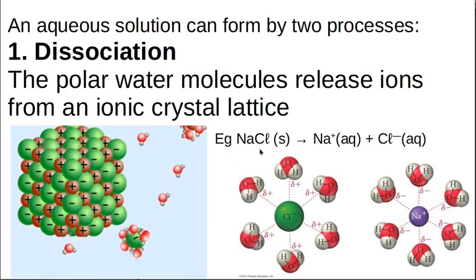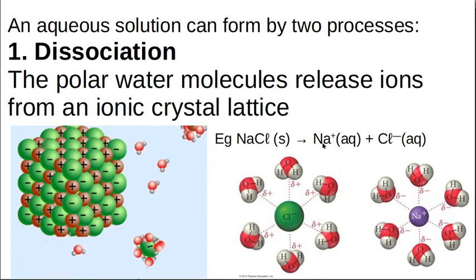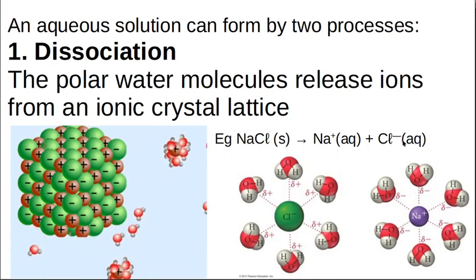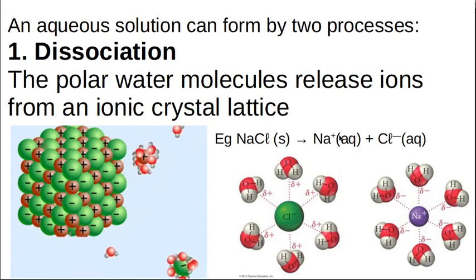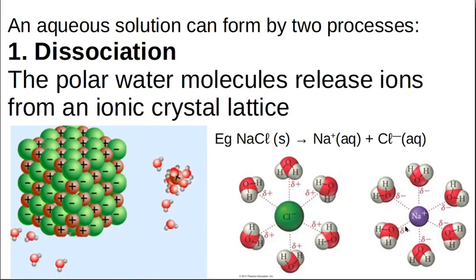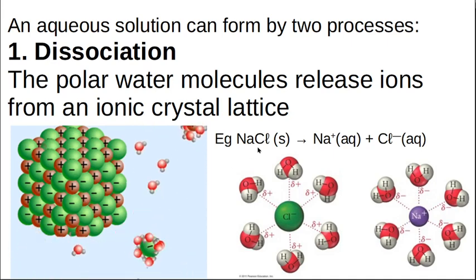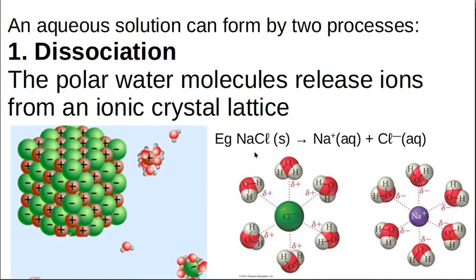And we can show this in a reaction. We can say sodium chloride solid, so this is a salt crystal, goes to Na+ aqueous and Cl- aqueous. So this aqueous is showing me that it has been dissolved in water like this, that the little crystals have been pulled apart, and they're running around as cations and anions in the solution. And this makes it much easier for them to react with something else the moment they dissolved in a solution. So this is dissociation. You have something that is already ionic, and the water comes along and splits it apart.